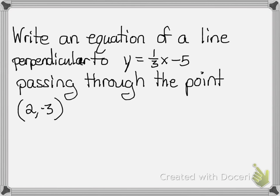Alright, let's look at this first example. It says write an equation of a line perpendicular to y equals 1 third x minus 5 passing through the point 2 comma negative 3. So my keyword here is perpendicular. Since it says perpendicular, that means looking at my original slope, I have to find the opposite reciprocal.